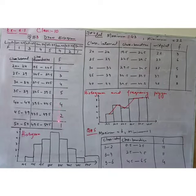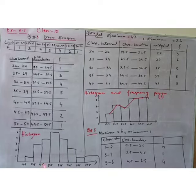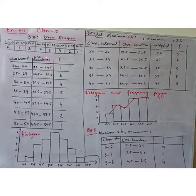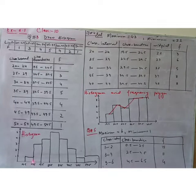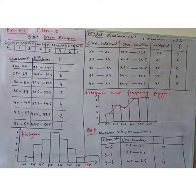Write down the frequencies given in the question. Now we draw the histogram by taking class boundaries along the x-axis: 19.5, 24.5, 29.5, 34.5, and so on. The upper class boundary of the first group and lower class boundary of the second group coincide, so we write it only once. The interval 24.5 to 29.5 shows the second group, 29.5 to 34.5 the third, and so on up to 49.5 to 54.5.